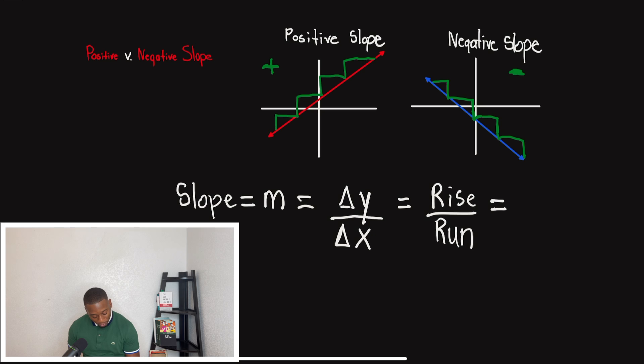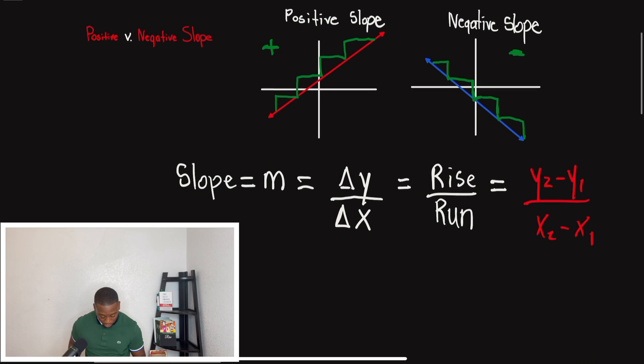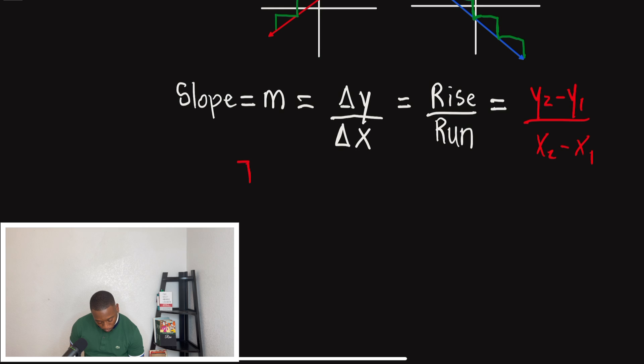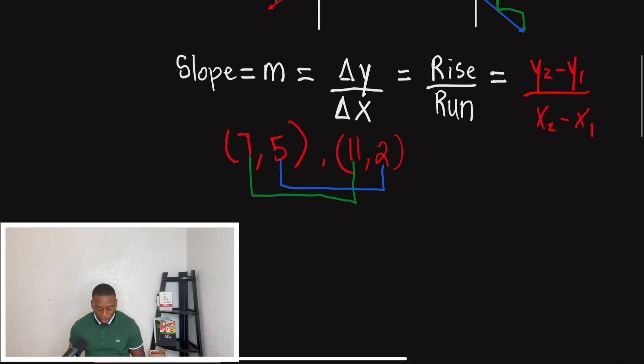So when we have two points on the graph, we have to use this equation in red: Y2 minus Y1 divided by X2 minus X1. That's basically the change in Y divided by the change in X. And let's say they give us the ordered pair. So they gave us two points on the graph. First one is (7, 5). And our second one is (11, 2). So the biggest thing we have to understand is that when we're finding the slope with two points, we have to make sure that we subtract X from X, and then we make sure that we subtract Y from Y, and we have to follow the same order.